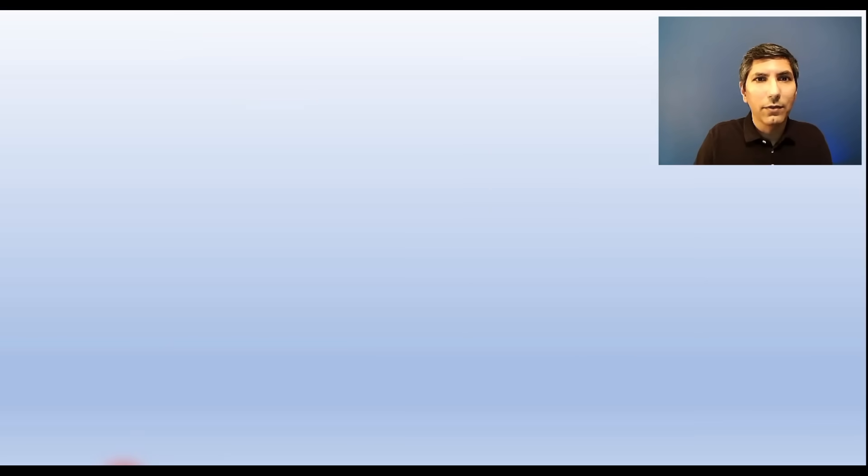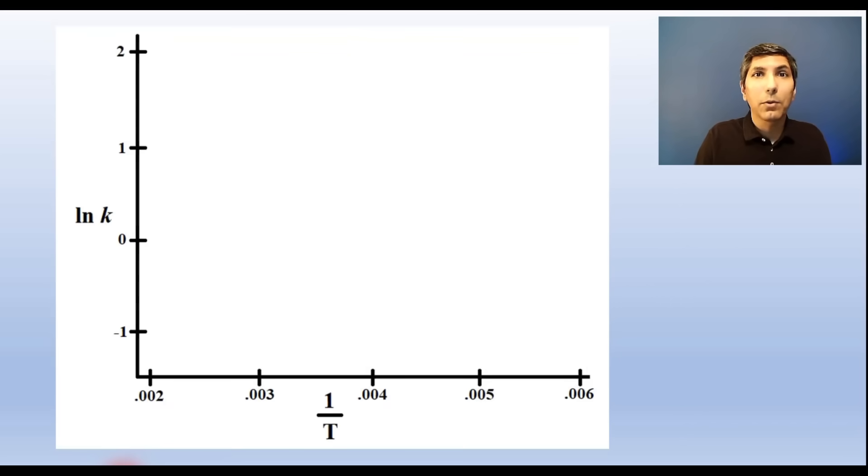The Arrhenius equation gives us a way to relate the rate constants for a reaction at different temperatures to the activation energy. If you plot the reciprocal of temperature on the x-axis and the natural log of the rate constant on the y-axis, you'll find that the slope is equal to the negative activation energy divided by the gas constant. Just multiply the slope by negative 8.314 joules per mole kelvin to determine the activation energy.